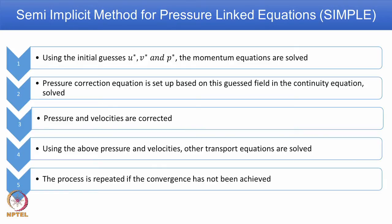We will have a relook at the SIMPLE procedure. Using initial guesses for velocity U-star, V-star and pressure P-star, the momentum equations are solved. A pressure correction equation is set up based on this guessed field in the continuity equation. When you solve it, you get the pressure correction term, which is used to correct pressure as well as velocities. Using the corrected pressure and velocities, one can also solve any other transport equation. The process is repeated until the convergence criteria is satisfied.